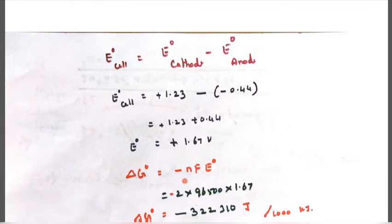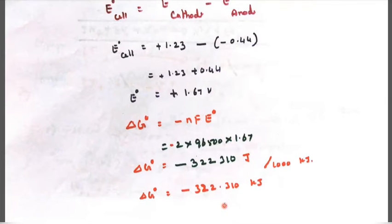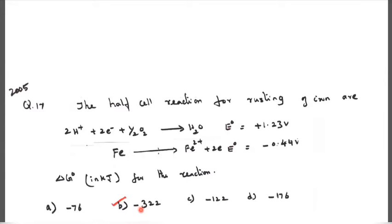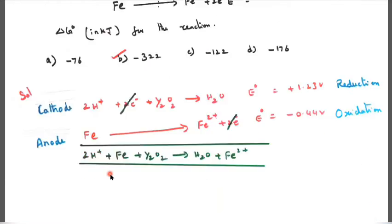Delta G0 equals minus N F E0. N is the number of electrons involved in the reaction. Faraday is 96,500 coulomb and E0 value is 1.67 voltage. Multiplying all we get 322,310 joules. To convert to kilojoules divide by 1000. So we get minus 322.310 kilojoules as the Delta G0 value. Minus 322 kilojoules is the answer.